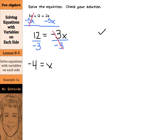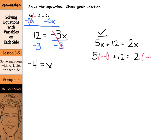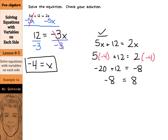Now, when it comes to checking our solution, we start by rewriting our original equation: 5x plus 12 equals 2x. Then we substitute in negative 4 for our x's. So 5 times negative 4 plus 12 needs to equal 2 times negative 4. That gives us negative 20 plus 12 equals negative 8, and negative 20 plus 12 is indeed negative 8, which verifies that negative 4 equals x.